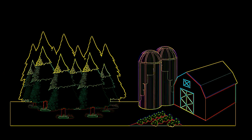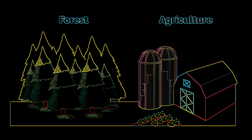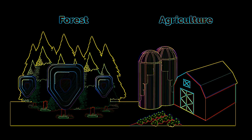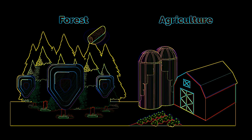Two very common types of ecosystem management are forestry and agriculture. Forestry's primary goal is to grow, manage and conserve forests. Usually this is so that the wood and other natural resources can be harvested over a long period of time, often measured in decades.